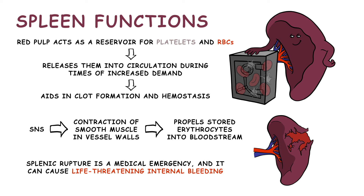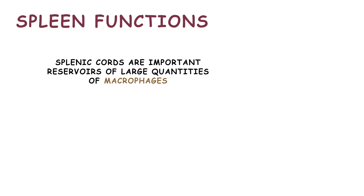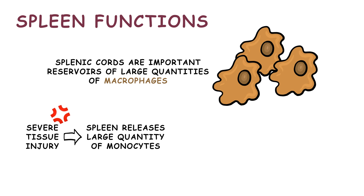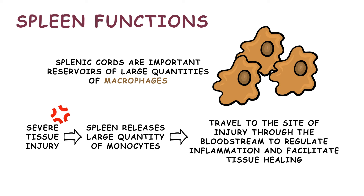Splenic rupture is a medical emergency, and it can cause life-threatening internal bleeding. The red pulp's splenic cords are important reservoirs of large quantities of macrophages. Upon severe tissue injury, the spleen releases a large quantity of monocytes, which travel to the site of injury through the bloodstream to regulate inflammation and facilitate healing.